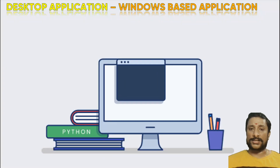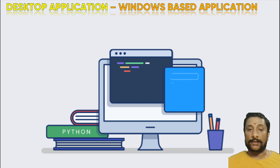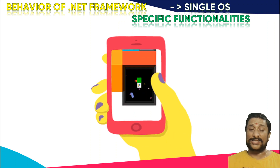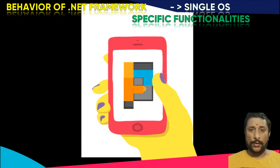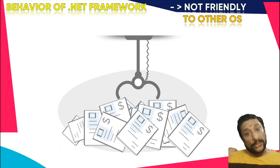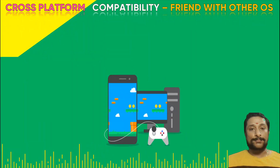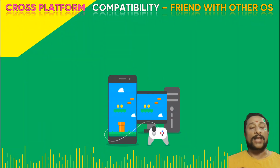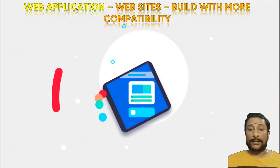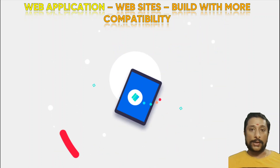Let's talk about the technology — I want to build a hotel building project. We started building a project via a Windows-based desktop application, which is not OS-specific friendly — that is the biggest problem. That's why we are looking for an application which can be friendly with other operating systems, not only Windows. That is called cross-platform compatibility.